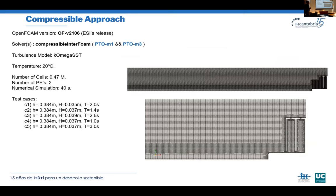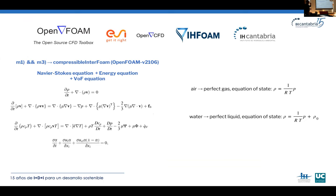Now we move to the compressible approach. Since the third approach is the fastest, we use compressible interFoam with the drag force reduction in the momentum equation, getting rid of the Forheimer equations. We use the same mesh, same cases, and same turbulence model, but now add temperature — the experiments were carried out in Portugal in spring, so we set temperature to 20°C. The governing equations now include Navier-Stokes, the alpha equation, and the energy equation. Air is modeled as a perfect gas, and water as a perfect liquid, each with its own equation of state.